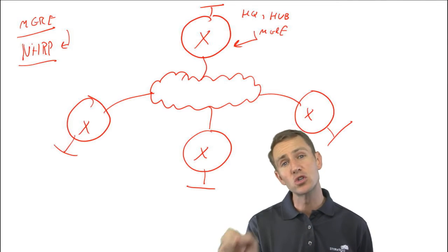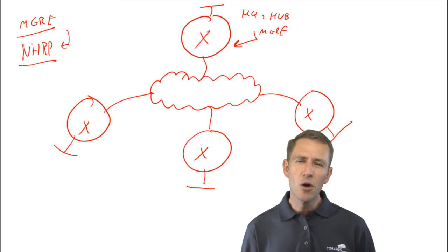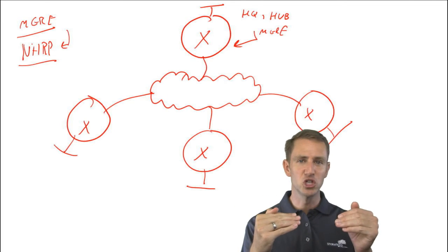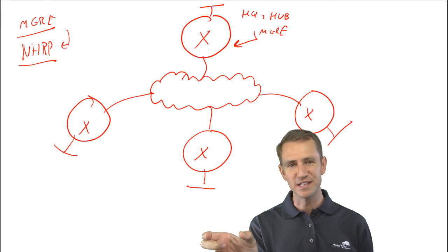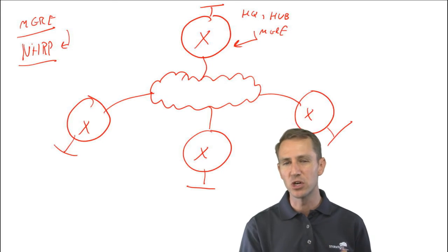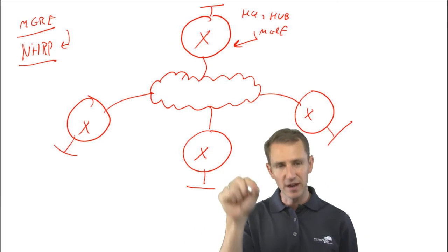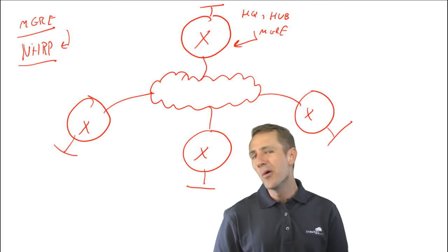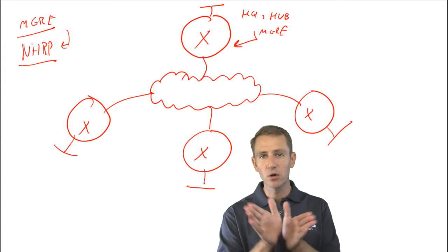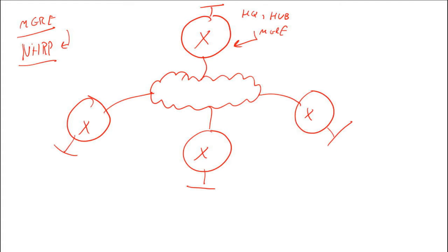If you don't want spoke-to-spoke tunnels and you want everything to traverse through the hub, you could use a traditional GRE interface on each of these devices. Remember the difference: GRE is traditionally going to be point-to-point, so you define this is where it's sourced from, this is where it's destined to, and things go through that tunnel. With MGRE, you can dynamically create lots of other tunnels as we're going to see going forwards. Now in order to create those tunnels, a couple of different things are going to happen.